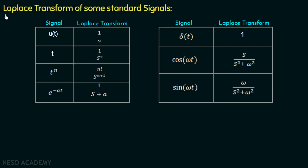Here is a list of Laplace transforms of some standard signals. The Laplace transform of u(t) is 1 over s. The Laplace transform of t (the ramp signal) is 1 over s squared. The Laplace transform of t to the power n is n factorial over s to the power n plus 1. The Laplace transform of e to the power minus at is 1 over s plus a. The Laplace transform of the impulse signal is 1. The Laplace transform of cos(ωt) is s over s squared plus ω squared, and of sin(ωt) is ω over s squared plus ω squared.